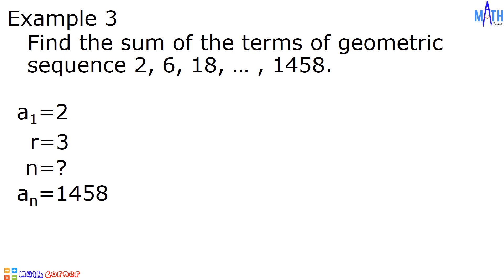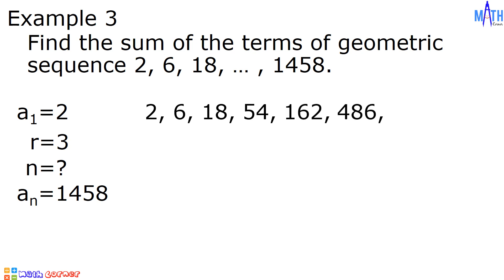Another way to find the value of n is to write all the terms up to 1458 and count the number of terms. We have 2, 6, 18. Let us multiply by the common ratio: 18 times 3 is 54; 54 times 3 is 162; 162 times 3 is 486; 486 times 3 is 1458. There are 7 terms in this geometric sequence. Therefore, the value of n is equal to 7.